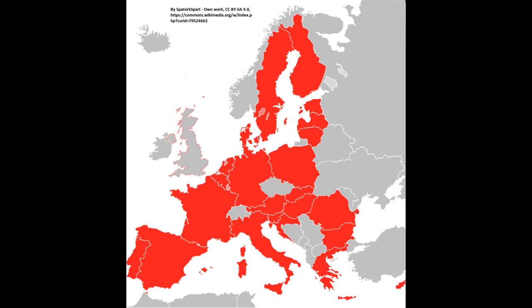Some of the largest national parties in the group are the Social Democratic Party of Austria, the Bulgarian Socialist Party, the Socialist Party of France, the Social Democratic Party of Germany, the Democratic Party of Italy, the Labour Party of the Netherlands, the Democratic Left Alliance of Poland, the Socialist Party of Portugal, the Social Democratic Party of Romania, the Spanish Socialist Workers' Party, and the Swedish Social Democratic Party. It is headed by Iratxe García of Spain.